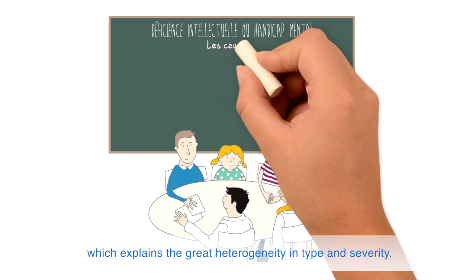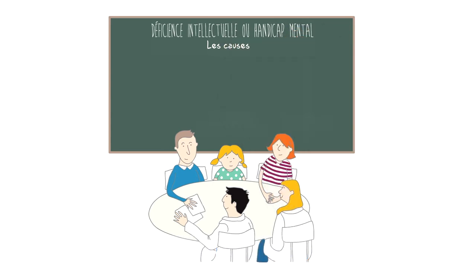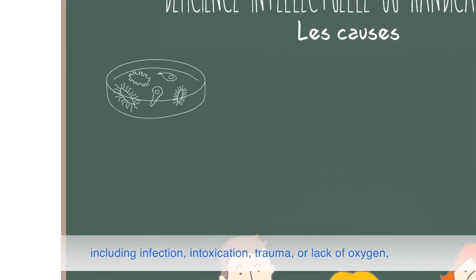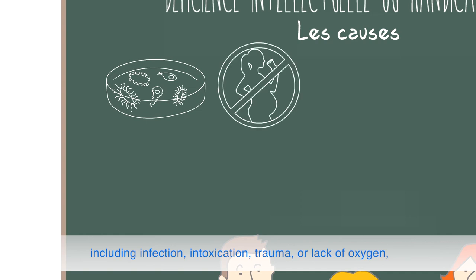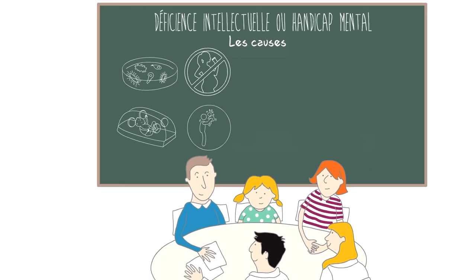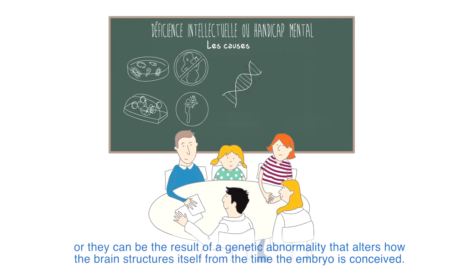Intellectual disability has many potential causes, which explains the great heterogeneity in type and severity. These causes may be related to events that occur during brain development, including infection, intoxication, trauma, or lack of oxygen. Or they can be the result of a genetic abnormality that alters how the brain structures itself from the time the embryo is conceived.